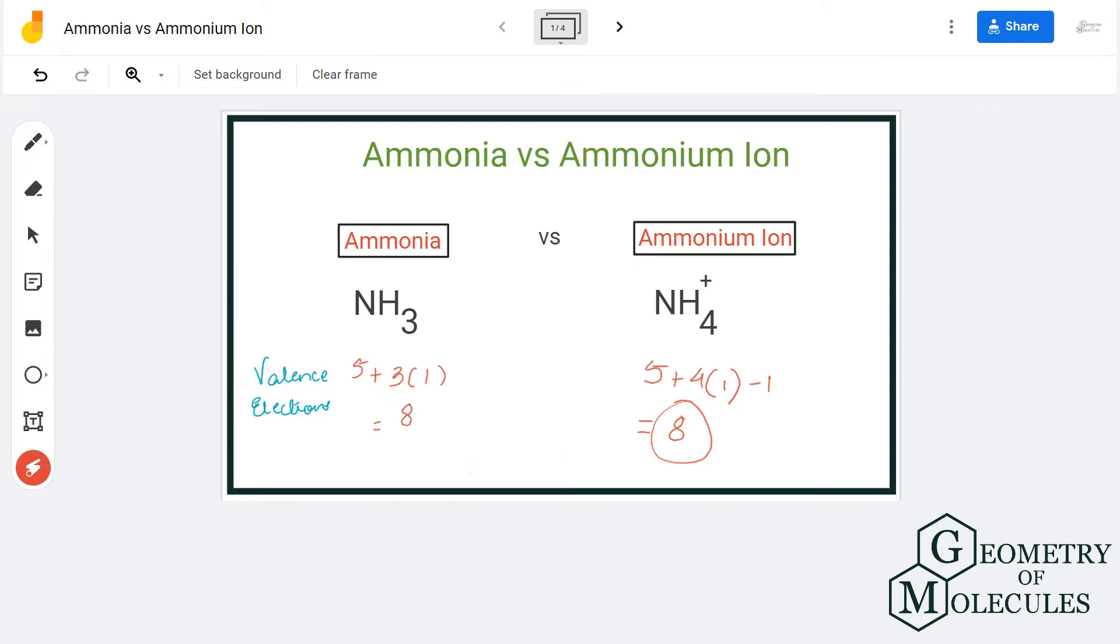Even though the valence electrons are the same for NH3 and NH4 plus, the charges is what makes it different. And now here are the Lewis structures of both these molecules, where you can see the nitrogen in NH3 has one lone pair of electrons as these electrons are not participating in any bond formation.